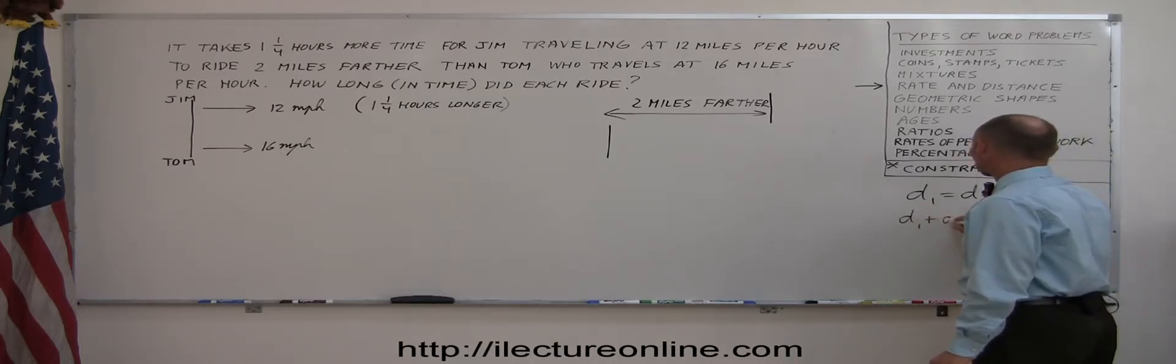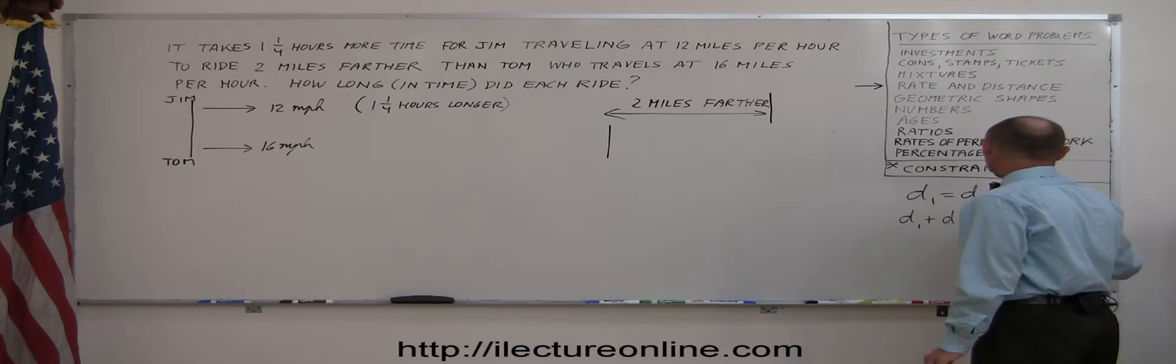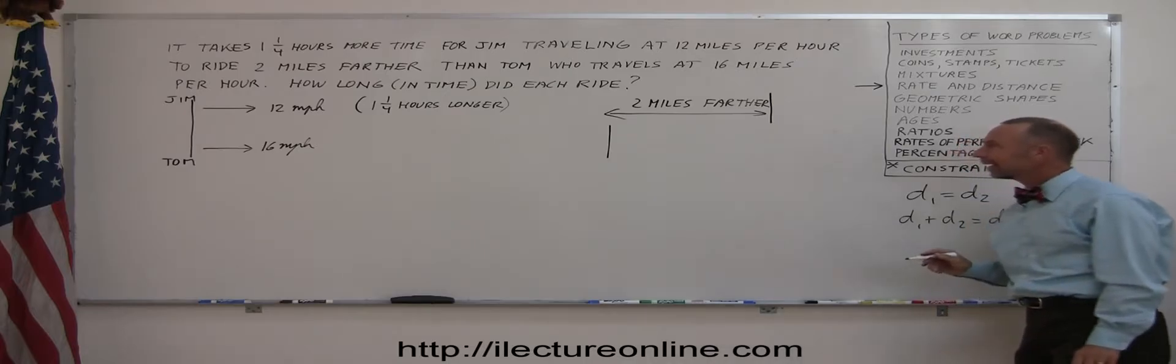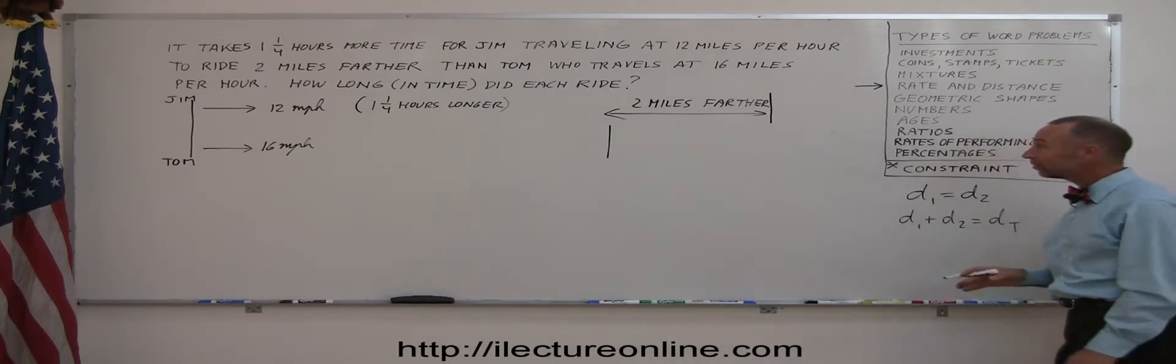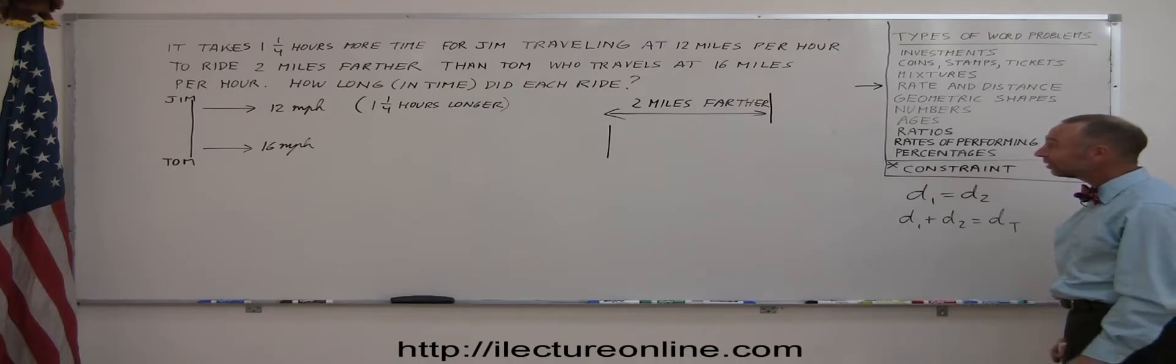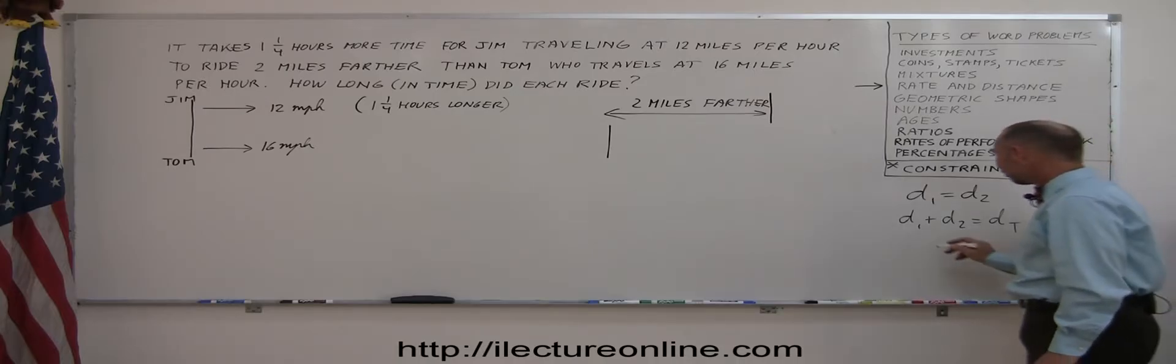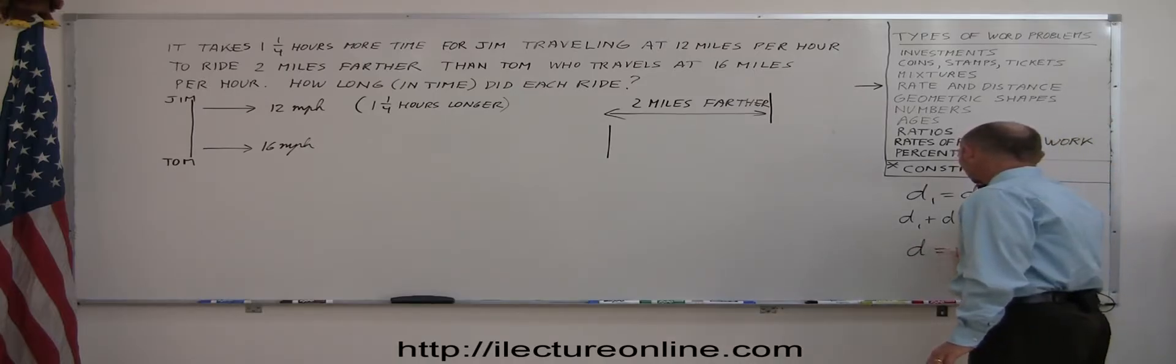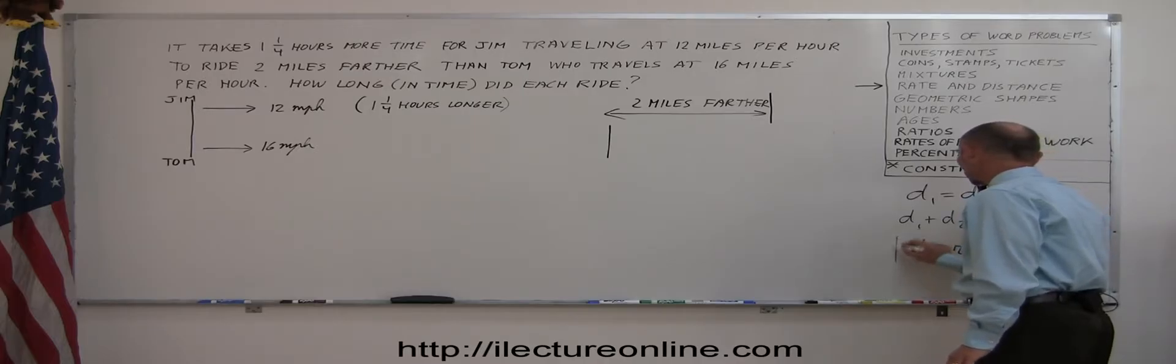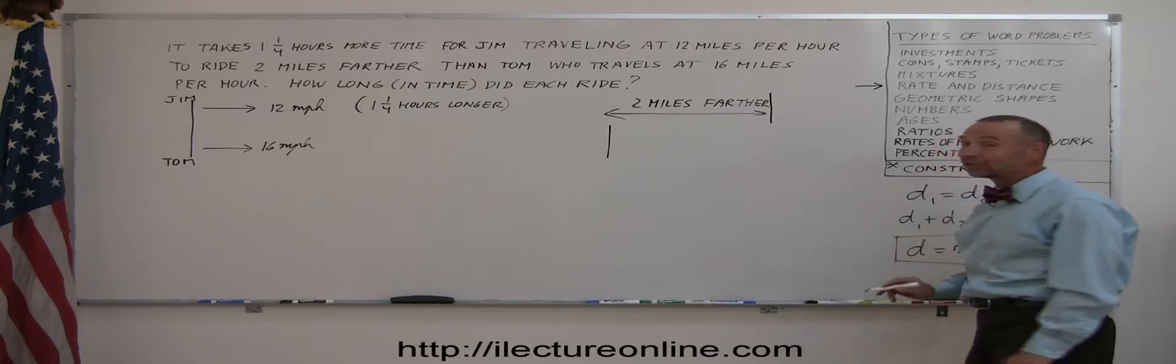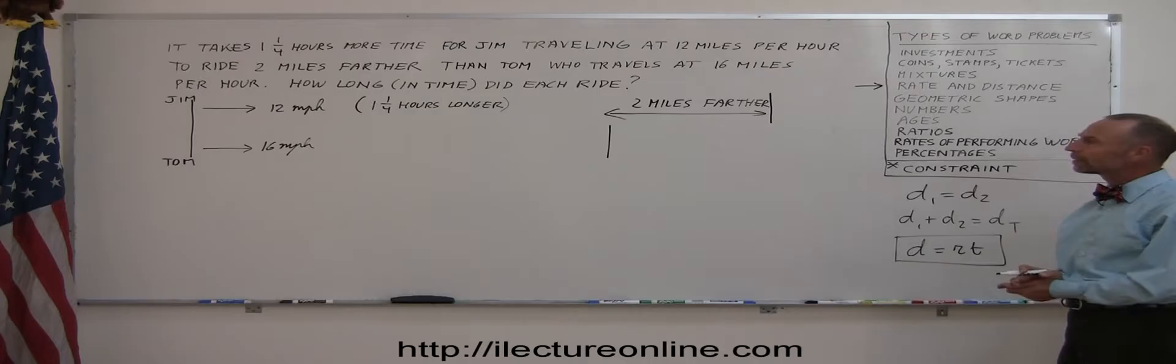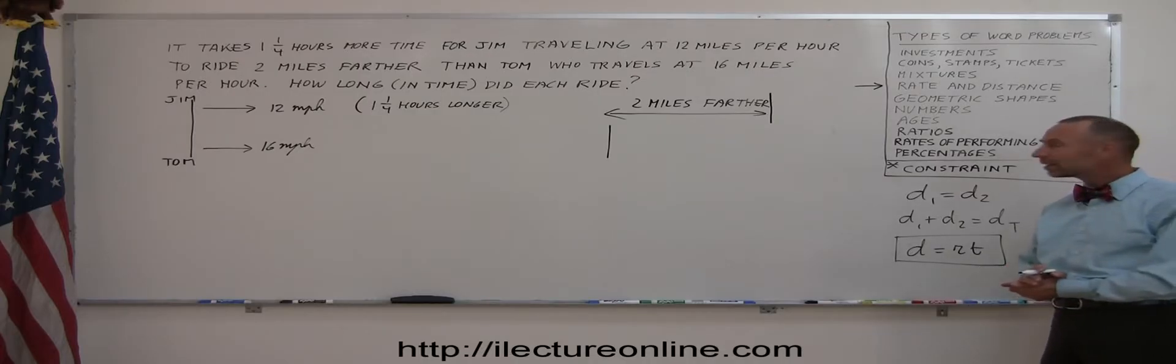Okay. So now we have Tom. Now Tom travels faster. Tom travels 16 miles per hour. And not quite as long. For one and a quarter hours less than Jim. And even though Tom travels faster, doesn't quite get as far because he's not riding as long. Alright. Hopefully that helps a little bit.